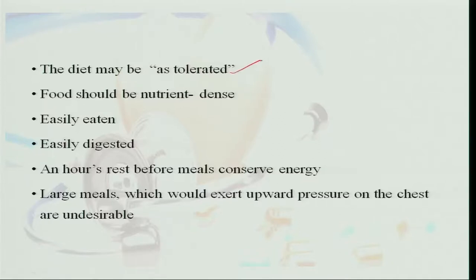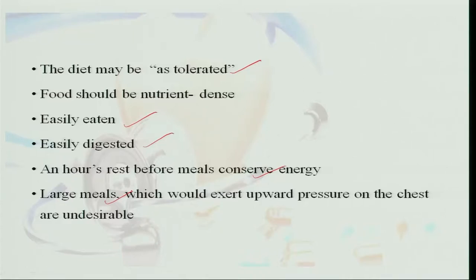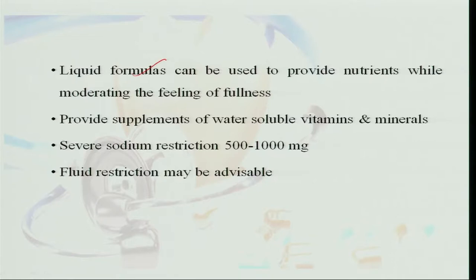Diet for congestive heart failure is as the patient tolerates. Food should be nutrient-dense and prepared so it can be easily eaten and digested; the patient should rest before eating to conserve energy. Large meals should not be given as they exert upward pressure on the heart. Liquid formulas can be used for providing nutrients, and supplements of water-soluble vitamins and minerals should be provided.